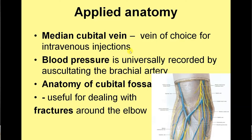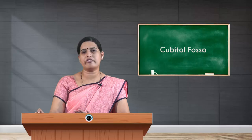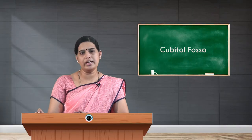Coming to the applied aspects: the median cubital vein is the vein of choice for intravenous injections, and the brachial artery is the artery universally used for recording blood pressures. Understanding the anatomy of the cubital fossa is very important in dealing with fractures around the elbow.